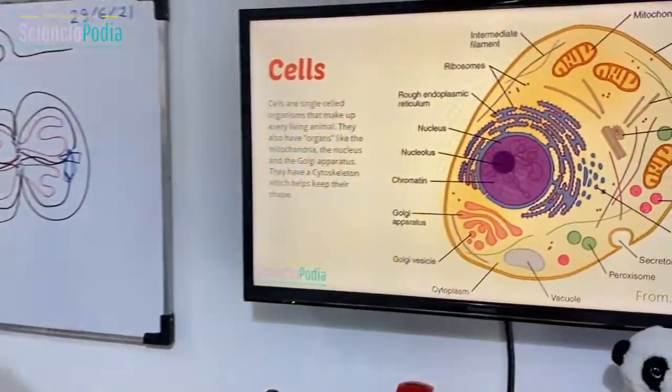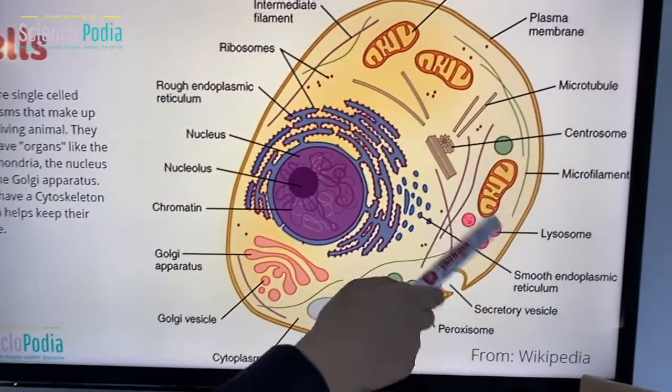I forgot the plasma membrane. The plasma membrane also helps keep the shape - it's the basis of it. And the cytoskeleton, which is all of the intermediate filaments, the microtubules, the microfilaments, they also help it.